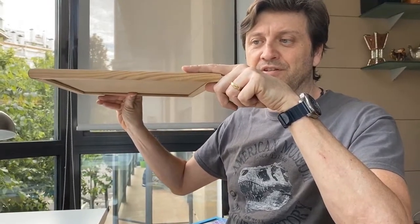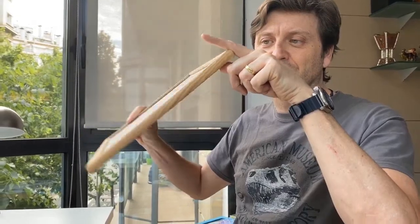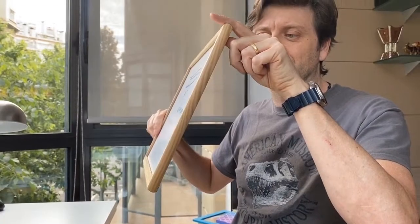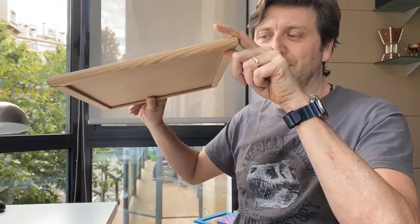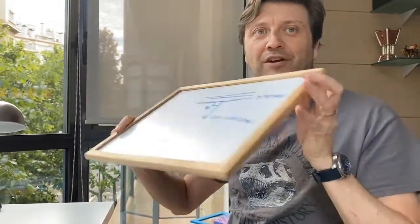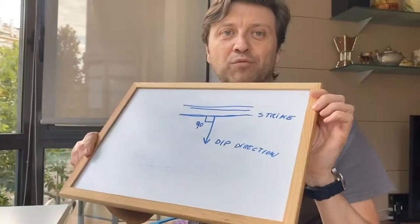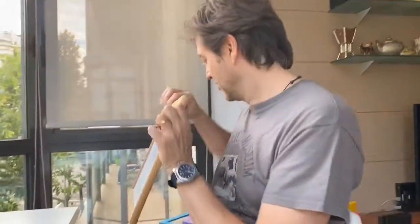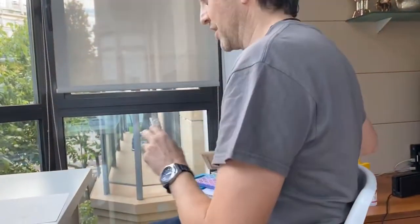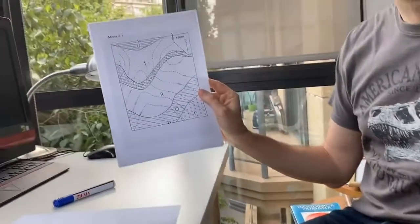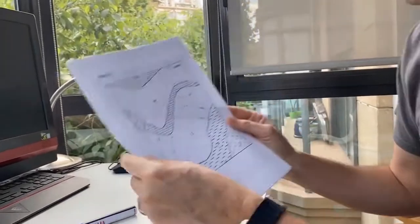The dip can be 0, 90, 45, 60, or 30 degrees. So once we have cleared these concepts, let's start with our cross-section. Here I have a very simple geological map.